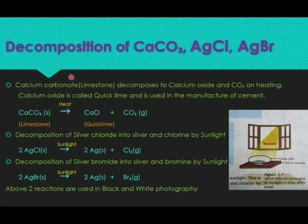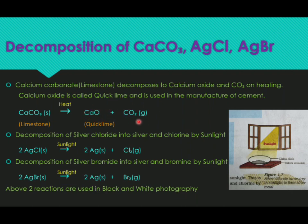Decomposition of calcium carbonate uses heat energy, so it comes under thermal decomposition. Calcium carbonate is available as limestone, or as chalk used to write on the board. When calcium carbonate is heated, it breaks down to calcium oxide and carbon dioxide gas. The common name of calcium oxide is quicklime, and the common name for calcium carbonate is limestone. This is an example of thermal decomposition.